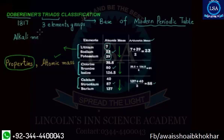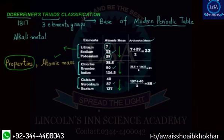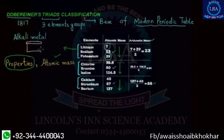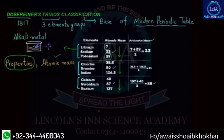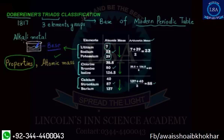Alkali metals are base-forming metals. When we dissolve these elements in water and add litmus paper, the litmus paper turns blue. This shows they are basic in nature. This is why they are called alkali metals.